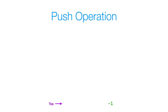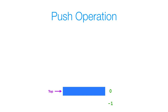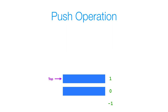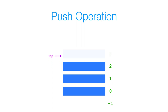Now let's talk about the push operation. Since we're using an array, the best way to represent an empty stack is to have our top be set to negative 1, because if our top were 0, it would mean that there's an element at index 0 in our array. When we push an element to our stack, our top goes up by one index, so our top is now at index 0. If we push another element, our top is now at index 1, then index 2, then index 3.